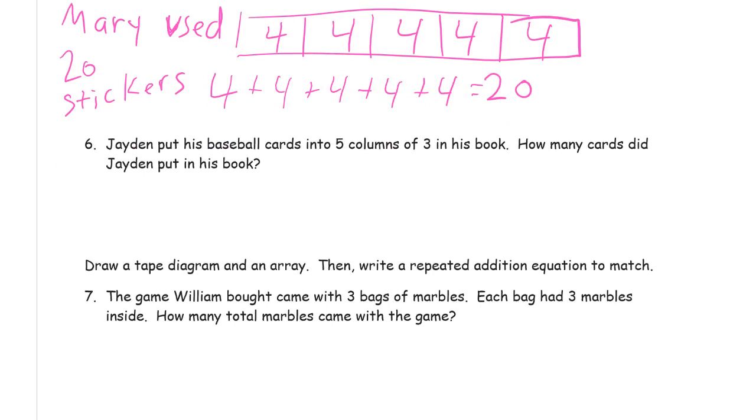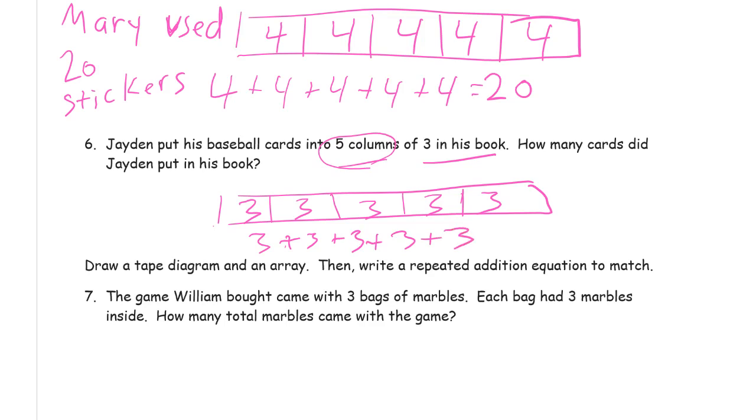Jayden put his baseball cards into five columns of three in his book. How many cards did Jayden put in his book? So, we're saying five columns of three. So, it's five columns are the groups. So, there's five groups. Same thing. We need a piece of tape with five groups. And there's three in each group. Five columns of three. Five groups of three. Five threes added together. And that's fifteen. Jayden put fifteen cards in his book.